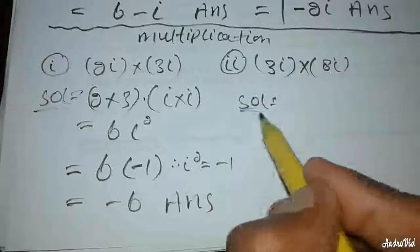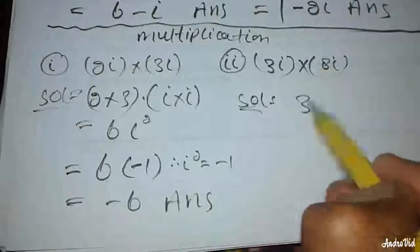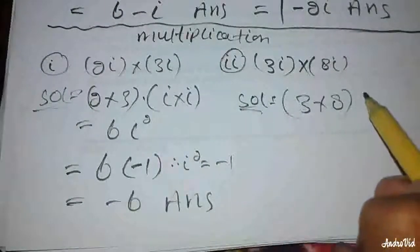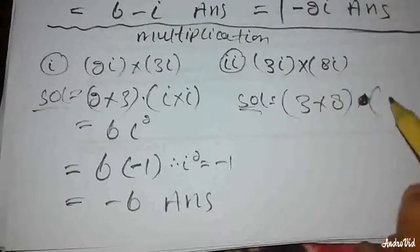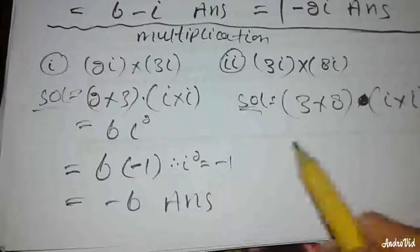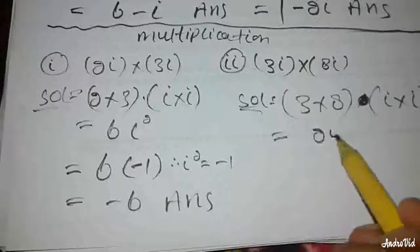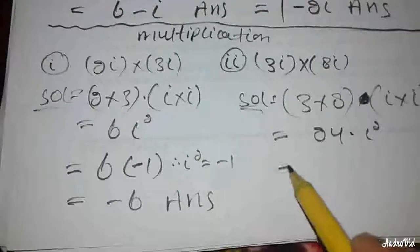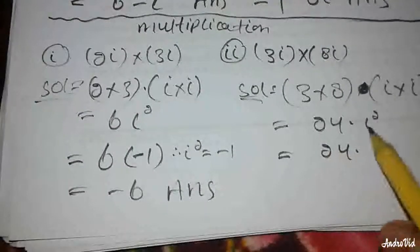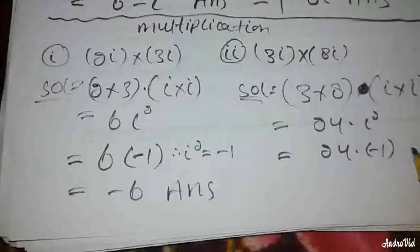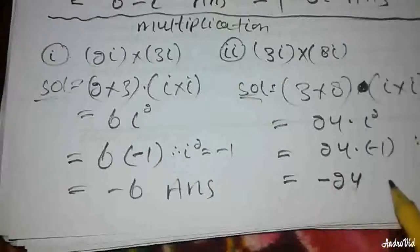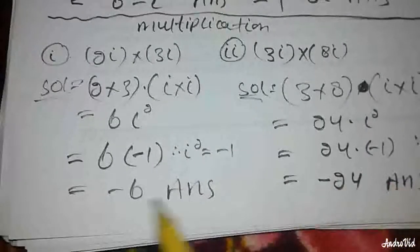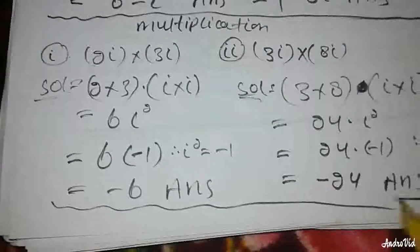Expanded into example number 2. We multiply: 1 plus iota squared is within the expression. When we multiply and iota squared appears, we replace it with minus 1. Between minus 2 and the result, that is the answer for multiplication example 2.